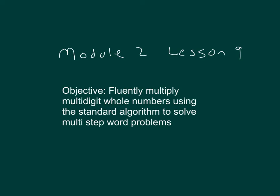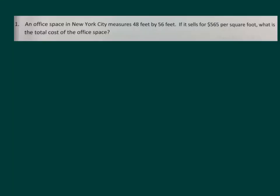Within this lesson, we will fluently multiply multi-digit whole numbers using the standard algorithm to solve multi-step word problems. Here is the first problem. Take a moment to read it together with me. An office space in New York City measures 48 feet by 56 feet. If it sells for $565 per square foot, what is the total cost of this office space?